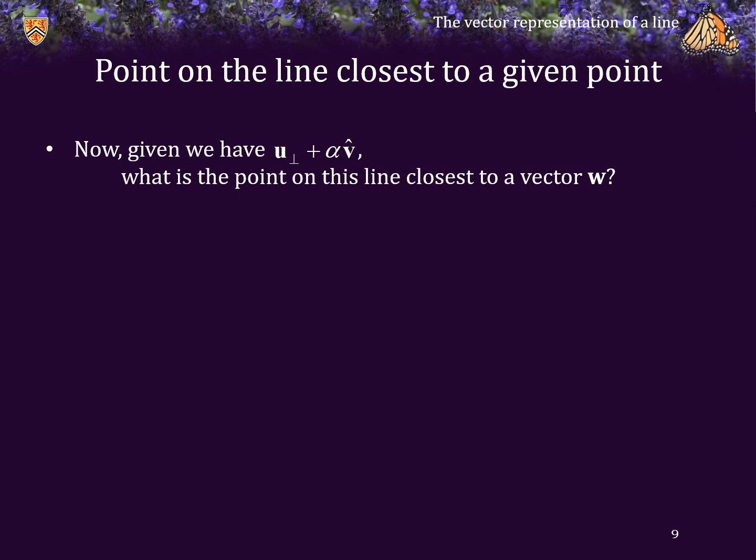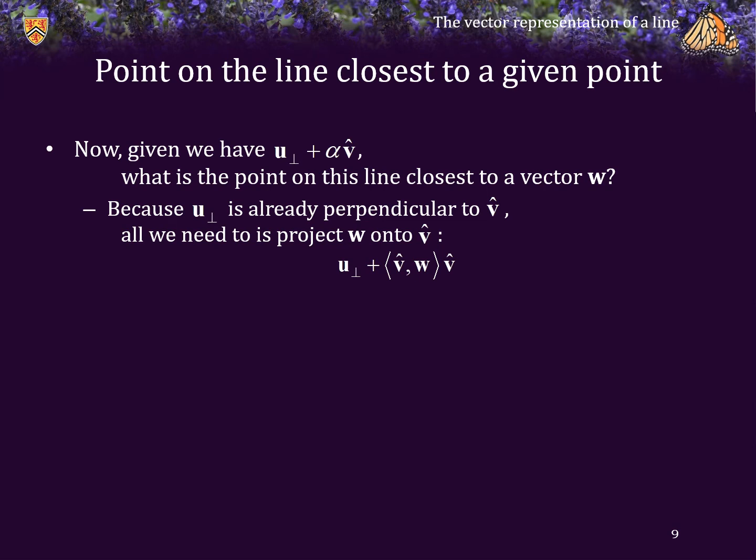Now suppose that we have this preferred representation of a line. What is the point on that line that is closest to an arbitrary vector w? Fortunately, because u_perp is already perpendicular to the normalized vector v̂, all we need to do is project w onto the normalized vector. It's simply this expression here, so all we need to do is calculate the inner product between v̂ and w. This is a much more difficult problem for an arbitrary vector representation u + αv, so our choice of ensuring that v̂ is normalized and that u is perpendicular to v̂ simplifies this problem greatly.